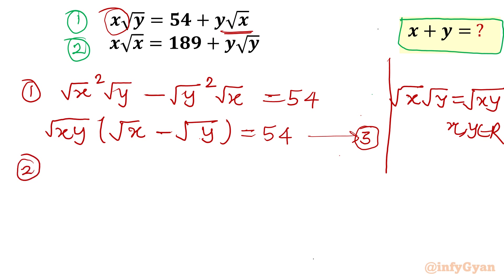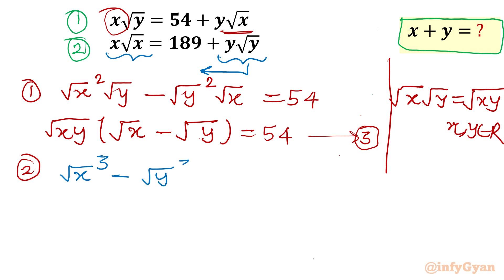For the second equation, x√x can be seen as (√x)³, since √x · √x · √x = x√x. Similarly, I will bring y√y to the left side with a minus sign, writing it as (√y)³. So the second equation becomes (√x)³ − (√y)³ = 189. This is equation 4.